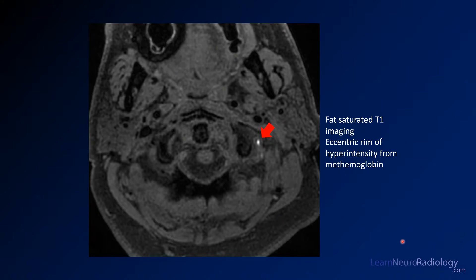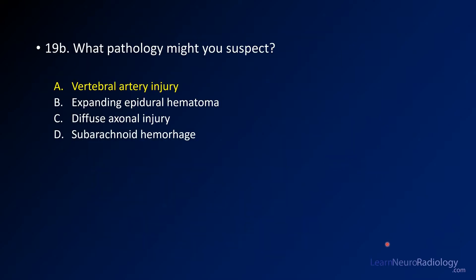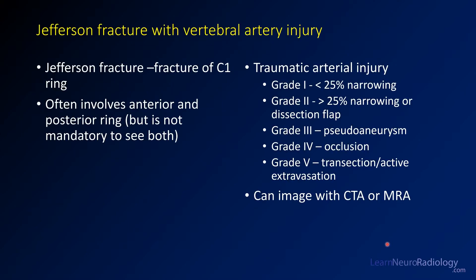This is a follow-up image from a fat-saturated T1-weighted sequence through that same region. What you can see here is an arrow showing an area of T1 hyperintensity in the transverse foramen. Along the vertebral artery, that hyperintensity comes from hemoglobin at the wall of the vertebral artery. So what you're looking at is a vertebral artery injury or vertebral dissection in the setting of trauma.